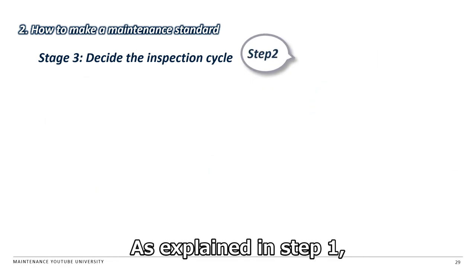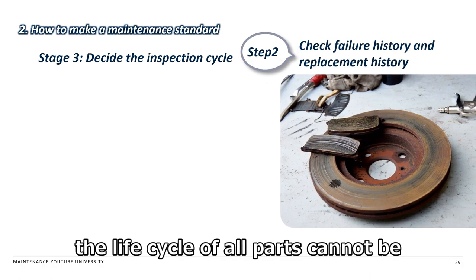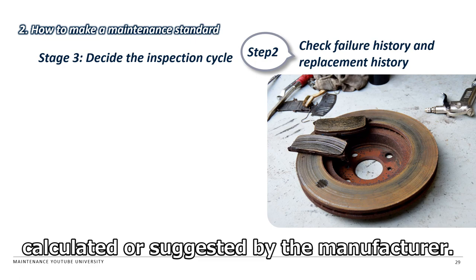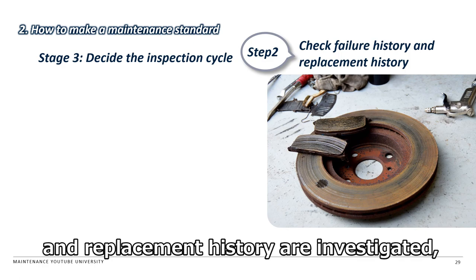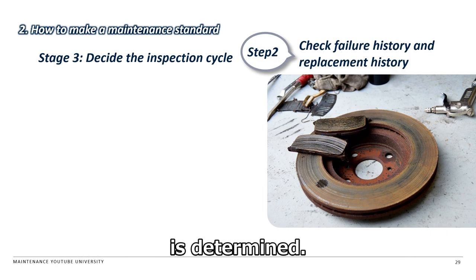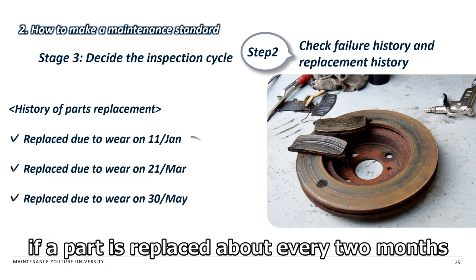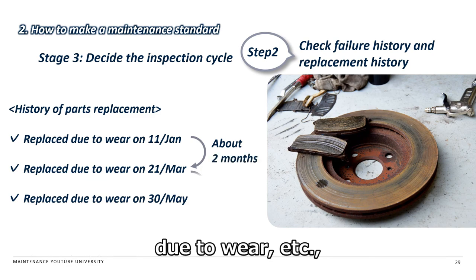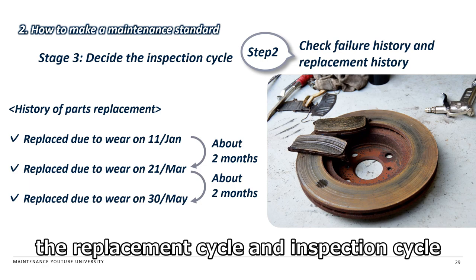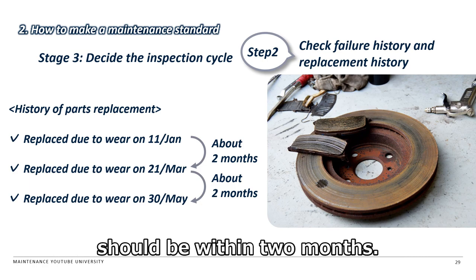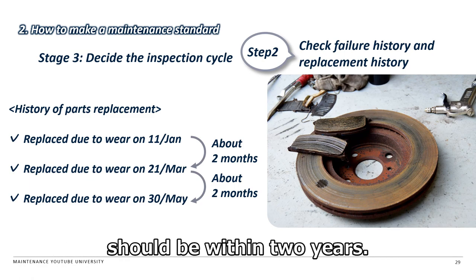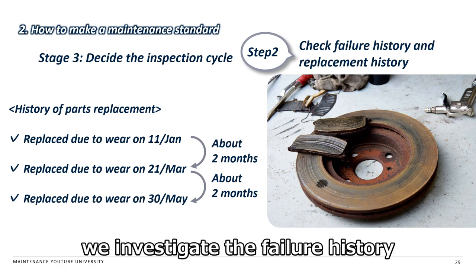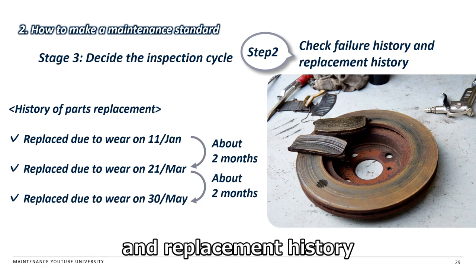As explained in Step 1, the life cycle of all parts cannot be calculated or suggested by the manufacturer. Therefore, in Step 2, the failure history and replacement history are investigated and the cycle of each inspection item is determined. For example, if a part is replaced about every 2 months due to wear, the replacement cycle and inspection cycle should be within 2 months. Also, if there is a part that fails about every 2 years, the replacement cycle and inspection cycle should be within 2 years. We investigate the failure history and replacement history to determine the inspection cycle.